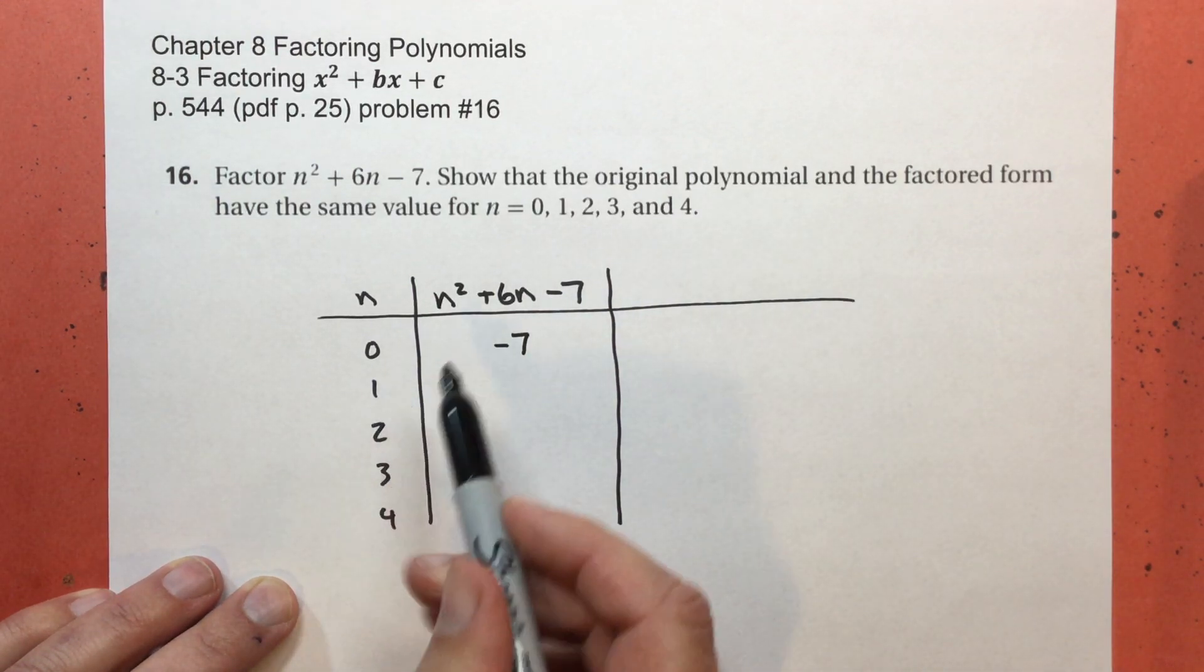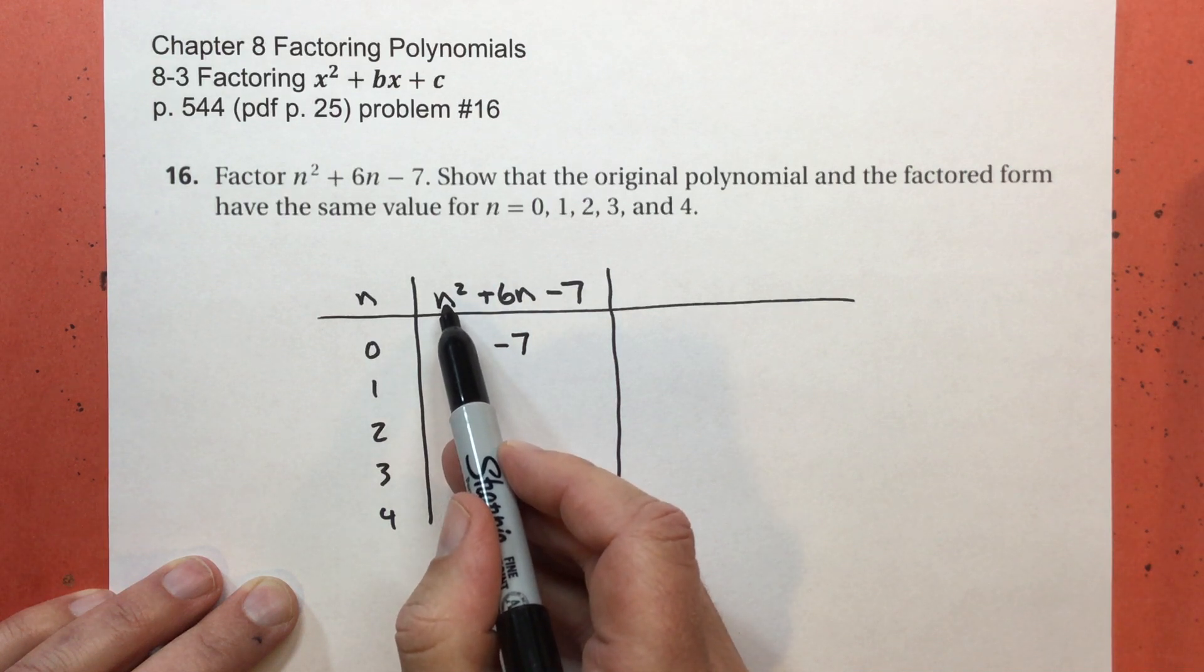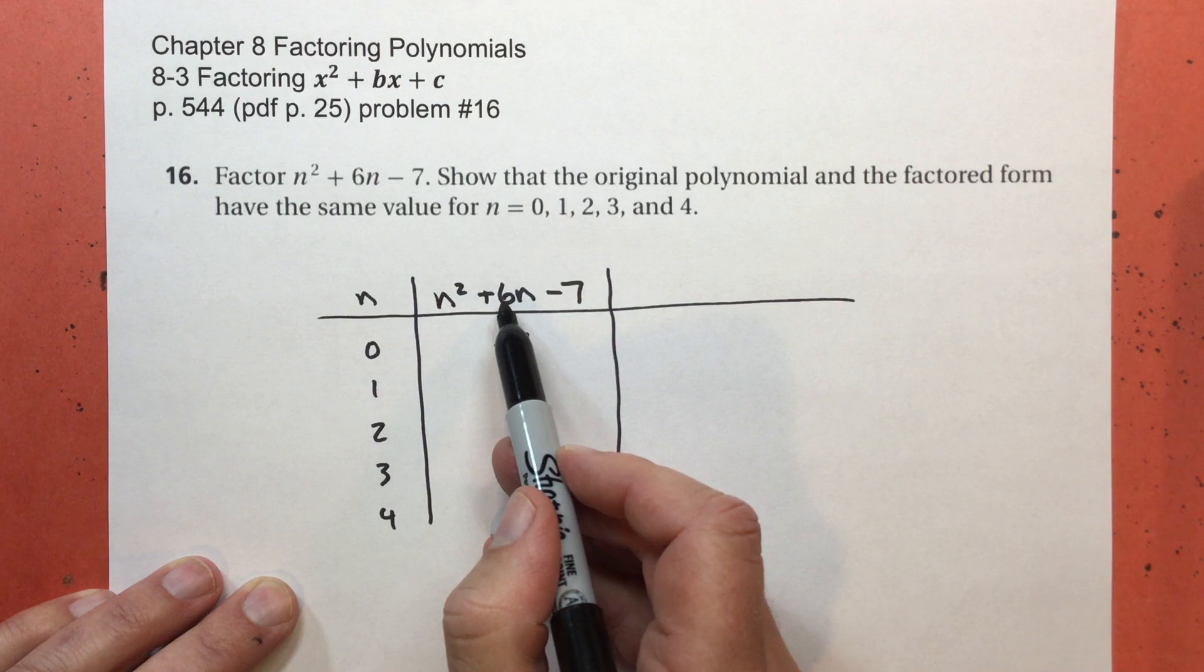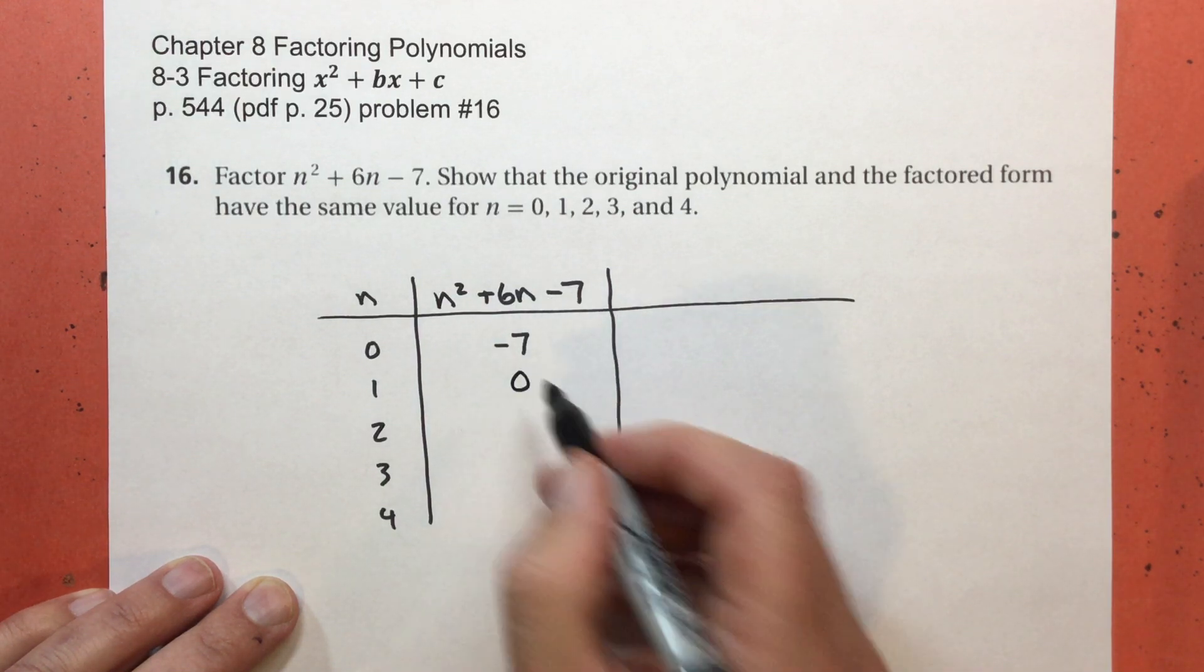We could try 1. 1 to the second power is 1. 6 times 1 is 6. 1 plus 6 is 7. 7 subtract 7 equals 0.